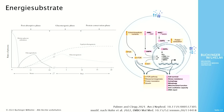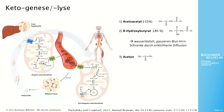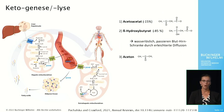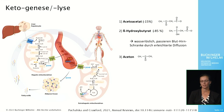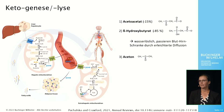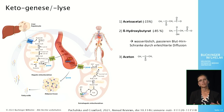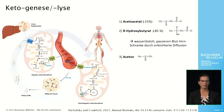The antioxidant capacity and DNA repair are also improved. The synthesis of ketone bodies, known as ketogenesis, occurs from acetyl-CoA in the mitochondrial matrix of the liver. In this process, the ketone bodies acetoacetate and beta-hydroxybutyrate are formed. Spontaneous decarboxylation of acetoacetate produces the volatile acetone, which is responsible for the typical fruity smell of the breath in fasting patients.